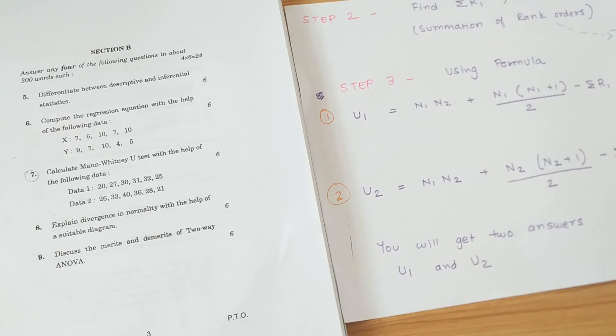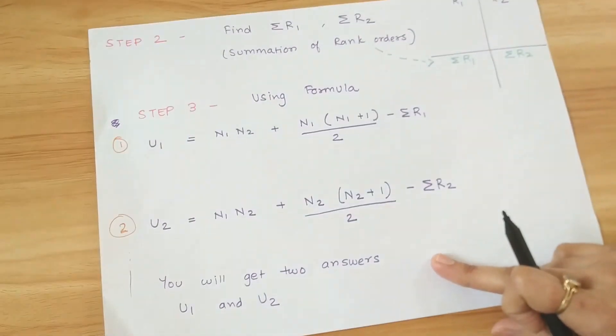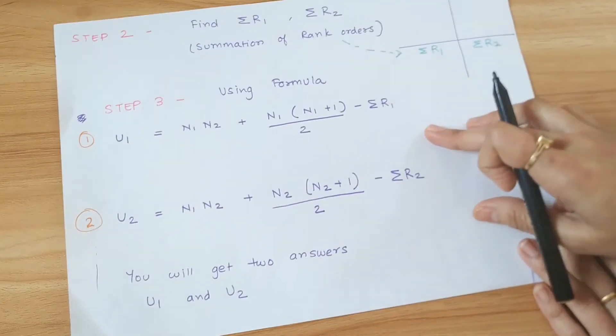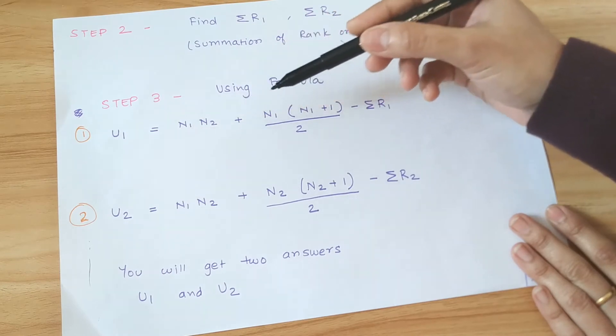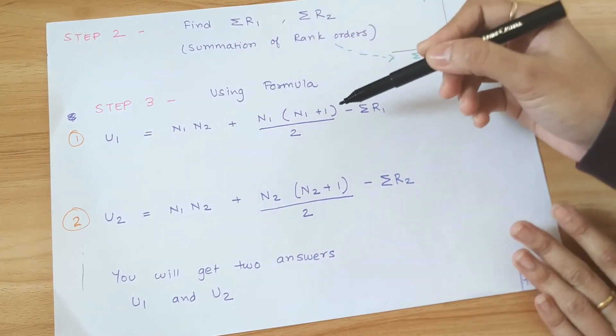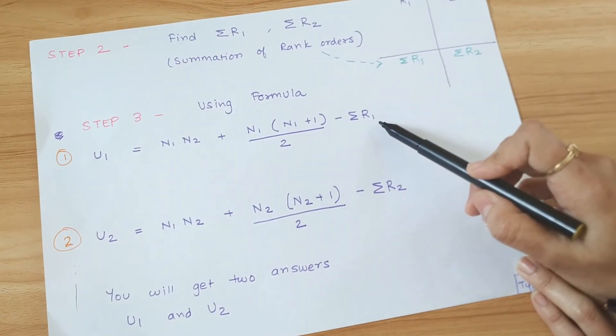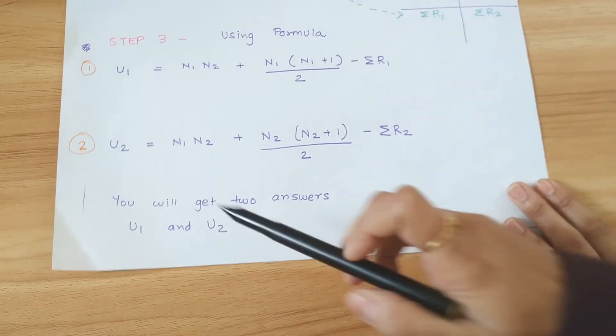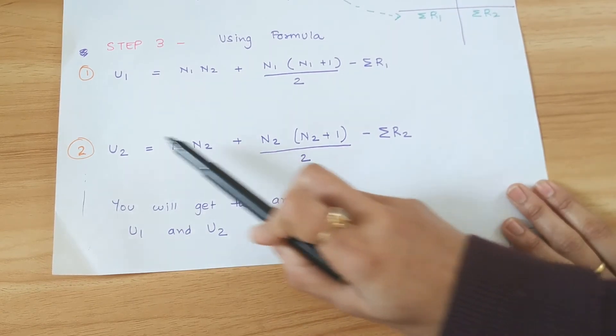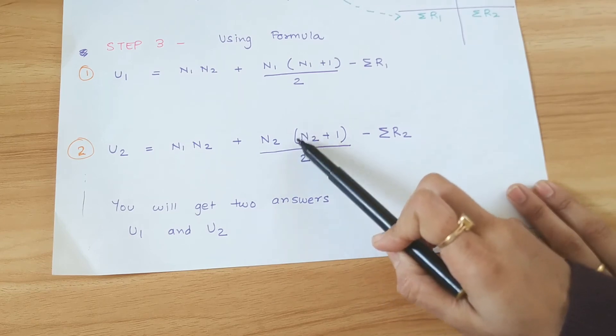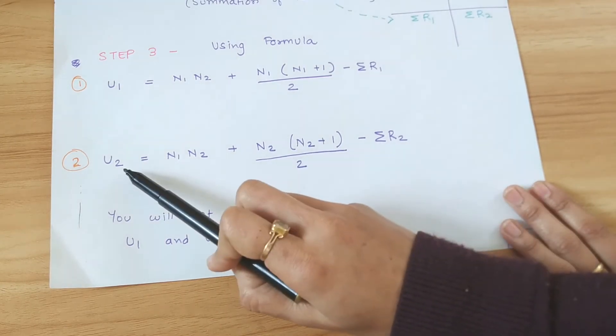Now we apply the formula. So the formula is U1 for finding U1. It is N1 into N2 plus N1 into N1 plus 1 divided by 2 minus the summation of R1. Similarly for U2, first this remains same. This changes. For U2 it becomes N2 into N2 plus 1 and minus summation of R2 for U2.